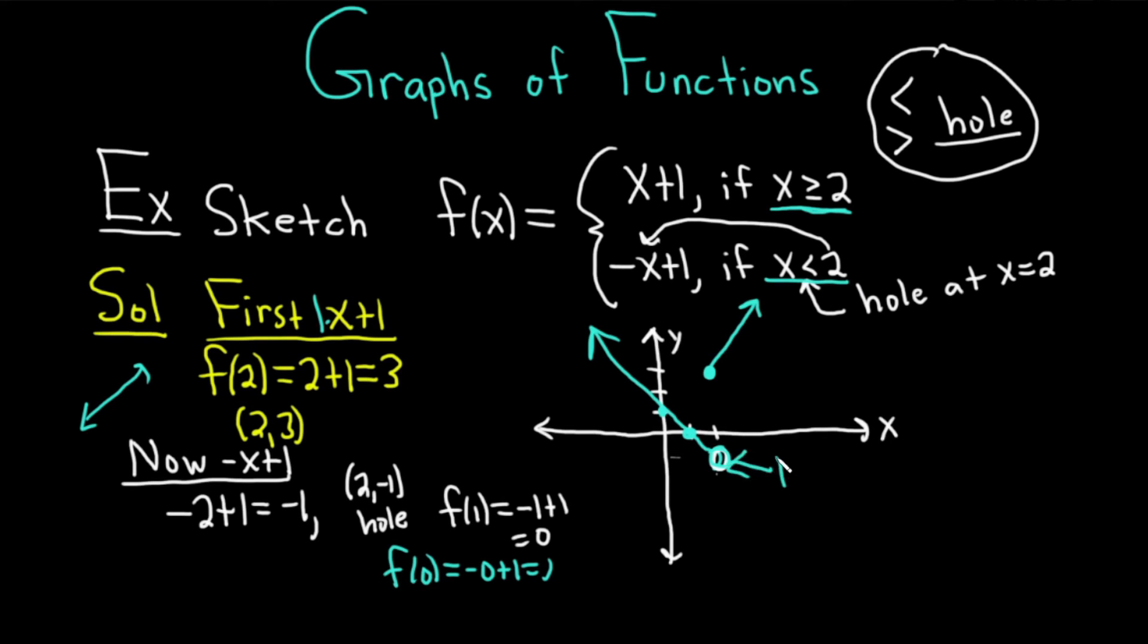And you know it goes this way because you only care about x is less than 2. And again, this is a hole. It's an open circle. So that's how you graph a piecewise function.